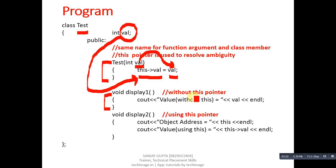Then another function is display2. It is printing 'this', so just 'this' will print object address. And if you want to print value using this pointer, then you can write this->val, so it will print the value which is available inside the val variable.